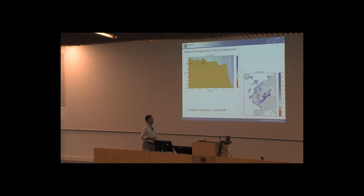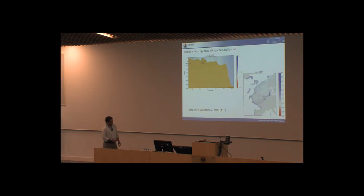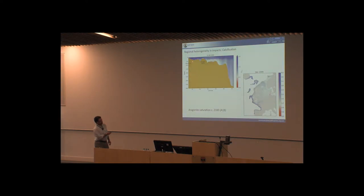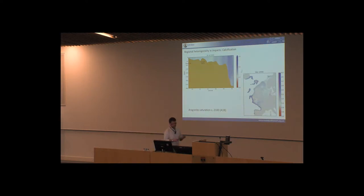Moving on to impacts: this shows aragonite saturation on the seafloor shelf towards the end of the century — both daily seasonal variability and monthly means. If we're worried about under-saturation affecting calcification, our model suggests it's spatially and temporally restricted at the end of the century, concentrated where you get trapping of high-respiration water below the thermocline with less mixing. This indicates that when talking about saturation state on the shelf, you can't talk about a mean — you've got to tie it to life cycles and whether under-saturation happens at a critical phase.